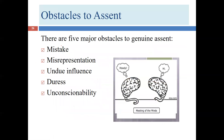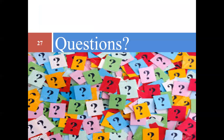So we've now gone through all five obstacles to genuine assent: mistake, misrepresentation, undue influence, duress, and unconscionability.